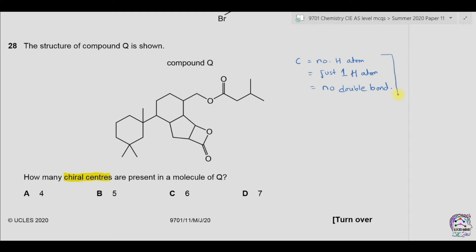If a carbon satisfies these three points, then it could be chiral. Starting from this carbon, we have two hydrogen atoms so it is not chiral. This carbon also has two hydrogen atoms — not chiral. This one has two hydrogen atoms — not chiral. This one has no hydrogen atom but has two methyl groups attached, so it is also not chiral.